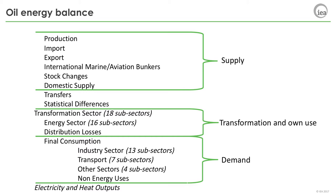Some consumption is attributed to energy industry own use, which is different from transformation. Transformation is a conversion of energy, while energy industry own use is how much energy is being consumed in the activities of producing energy — like how much energy is being consumed in a refinery or in an electricity plant to support the activity of the plant. We can think of this as having the lights on in a refinery. Finally, there is total final consumption. This is how energy products are used and generally are categorized into industry, transportation, and other — comprising residential, public and commercial uses, and of course non-energy uses.